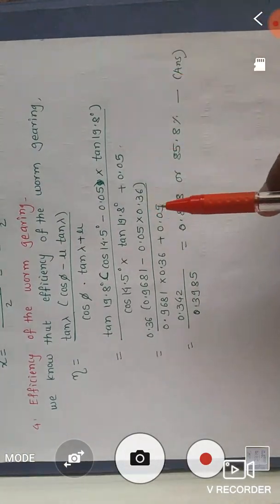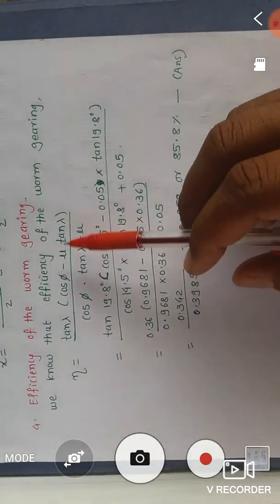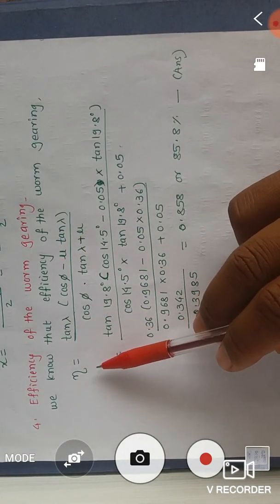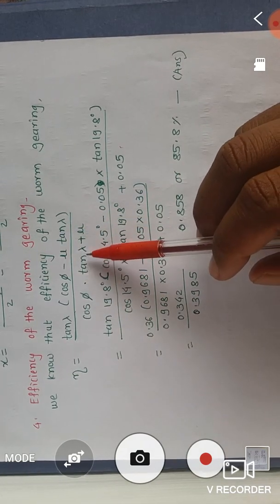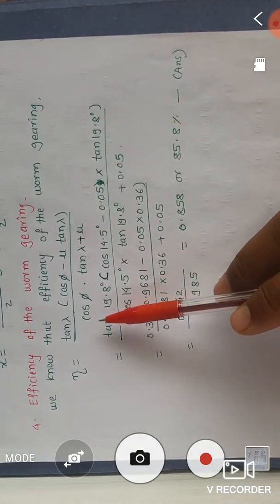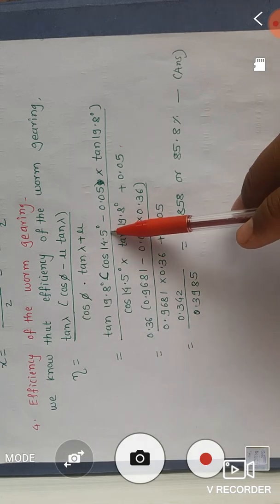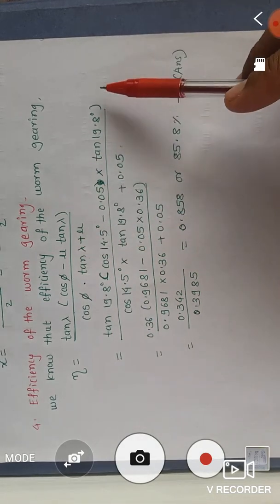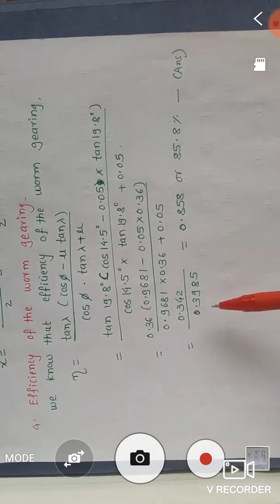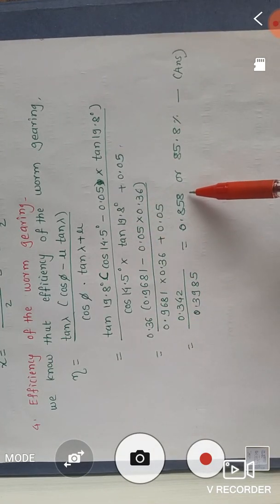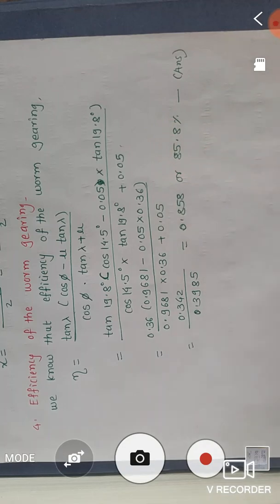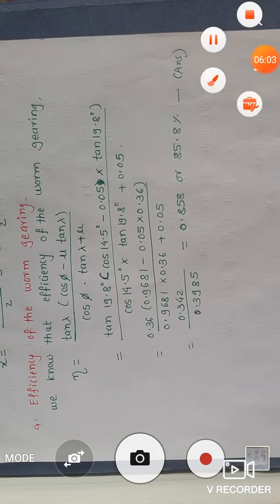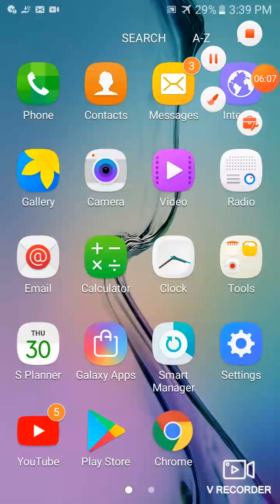Finally, we find the efficiency of worm gearing using eta = (tan λ · (cos φ − μ · tan λ)) / (cos φ · tan λ + μ). Substituting λ = 19.8°, φ = 14.5°, μ = 0.05, after calculating we get efficiency = 0.858 or 85.8 percent. This is our fourth answer. In this way we covered the efficiency of worm gearing and solved a numerical example. Thank you.